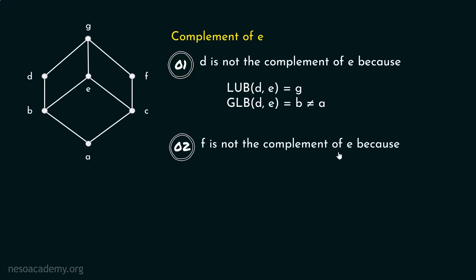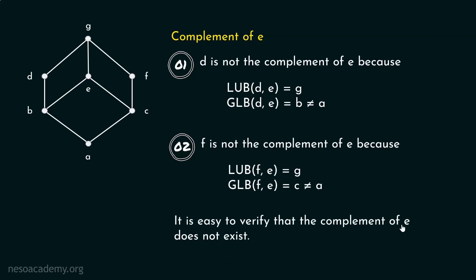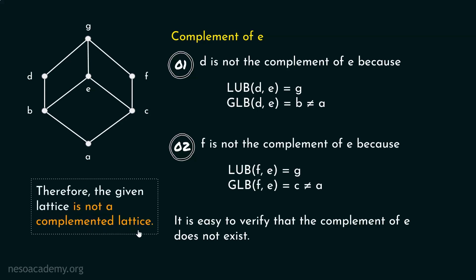Also, F is not the complement of E because the least upper bound of F and E is G, but the greatest lower bound of F and E is equal to C, which is not equal to A. You can check all other elements — B, C, A, G — and none of them will be a complement of E. Complement of E does not exist.